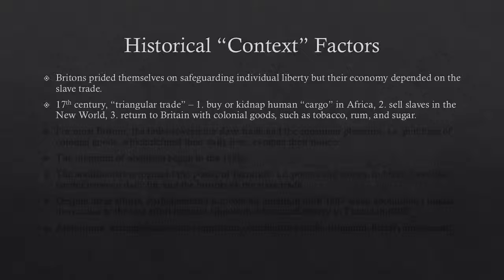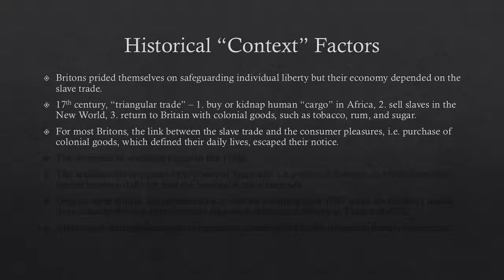The slave trade was triangular: they would kidnap or buy people in Africa and sell the slaves in the New World — which is not just America, but also the West Indies — and then return to Britain with colonial goods such as tobacco, rum, and sugar. These colonial goods were part of people's daily lives. People purchased tobacco, rum, and sugar in Britain, but they didn't really realize that slave labor was an integral part of how they received these goods. And that was the problem.